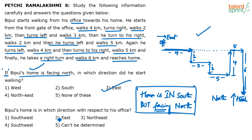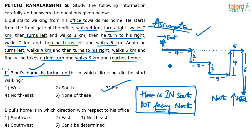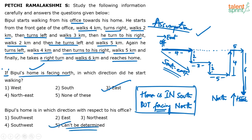Next question: Bipul's home is in which direction with respect to his office? Understand — we do not know if his home is exactly here and office is exactly here. This was an assumption. The whole path is an assumption based on the starting direction. We assumed the office faces east, but he could have started walking north, west, or south — there are four possibilities, and accordingly we get four possibilities for home's location. As per our assumption, the home is in the south-east direction, but this is not always correct. The answer cannot be determined.